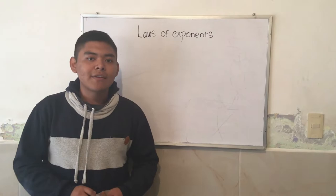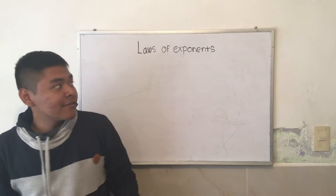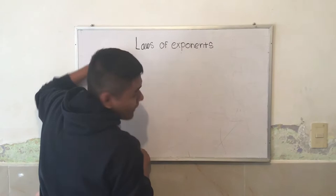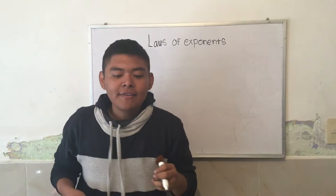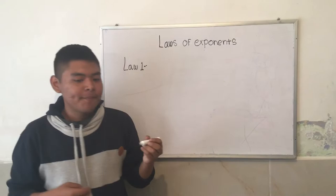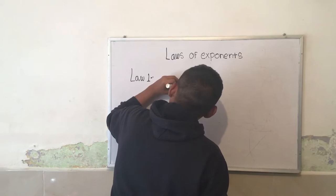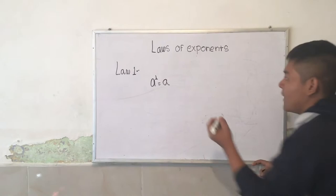With the first law: exponent potency equal to 1. This tells us that when the exponent is 1, the result will be the same value of the base. That is, A to the 1 is equal to A. For example, we have 9 to the 1 equal to 9.